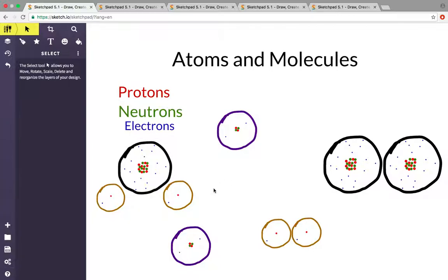Atoms and molecules are made up of smaller units: protons, neutrons, and electrons. We'll go through each of these. Protons are in red. They are at the center of the atom. As you can see, these circles are atoms, and the dots in the middle are the particles. So the red dots are protons.